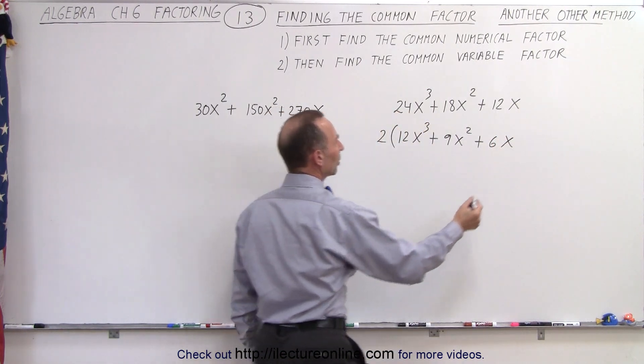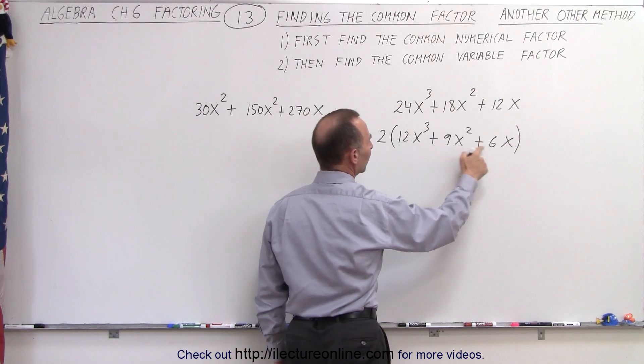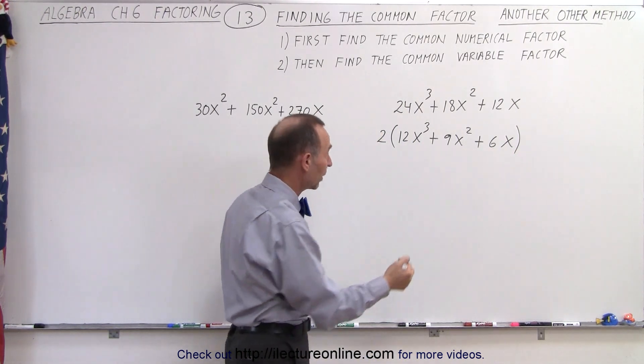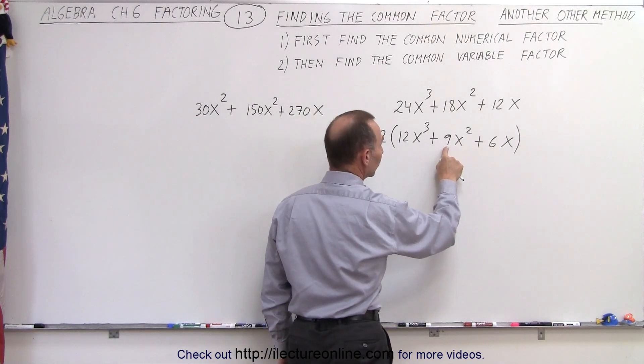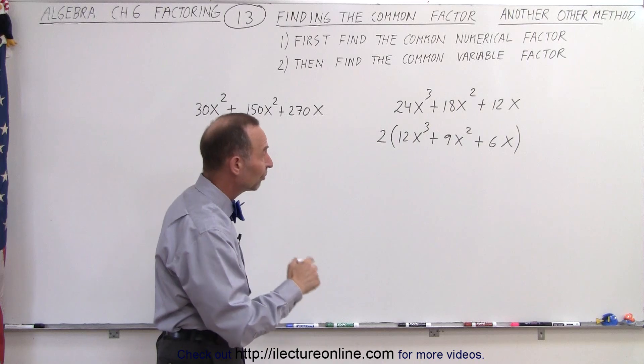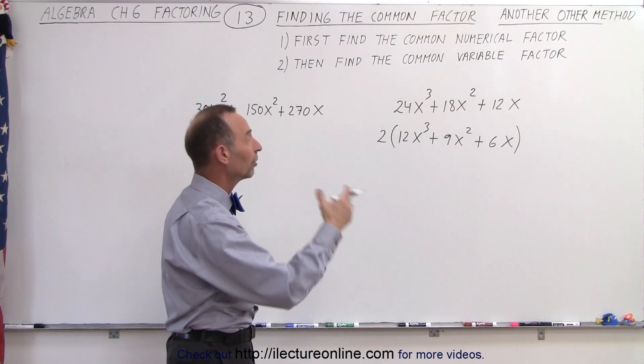Then if we take a look at this, we notice there's another common factor, which would be the number 3. We can no longer pull out a 2 because these two are even, that one is odd, but all of these numerical coefficients are divisible by 3, so we can factor out another 3.